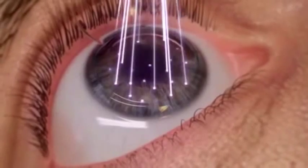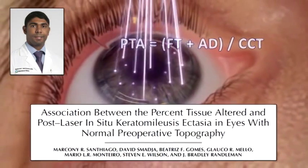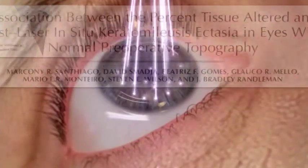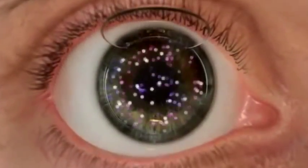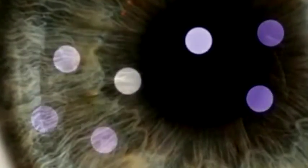The percentage of tissue altered introduced by Santiago and co-workers was found to be an important ectasia risk factor for cases with normal corneal topography. However, the biomechanical impact from surgery is more complex than PTA by itself, being related to the region and number of lamella that are severed during the procedure.